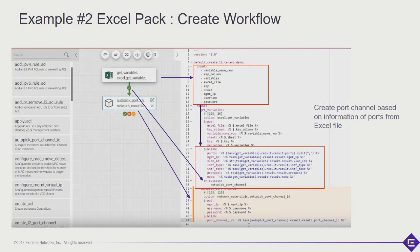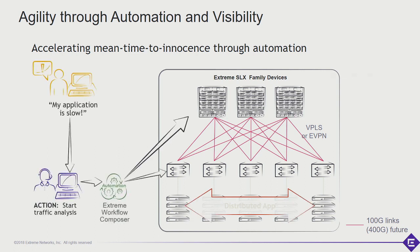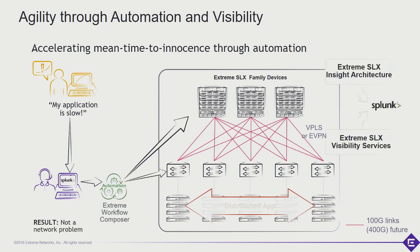Putting this into context: say you have a slow application in your network and someone calls you saying the application is slow. With the Inside Architecture and a VM running on a switch, you could have a Wireshark capture triggered when slowness is detected. You could try to remediate the problem — add a LAG group for more bandwidth, open a trouble ticket, post a Slack message, enable a Wireshark packet capture, and attach that to your Jira trouble ticket.